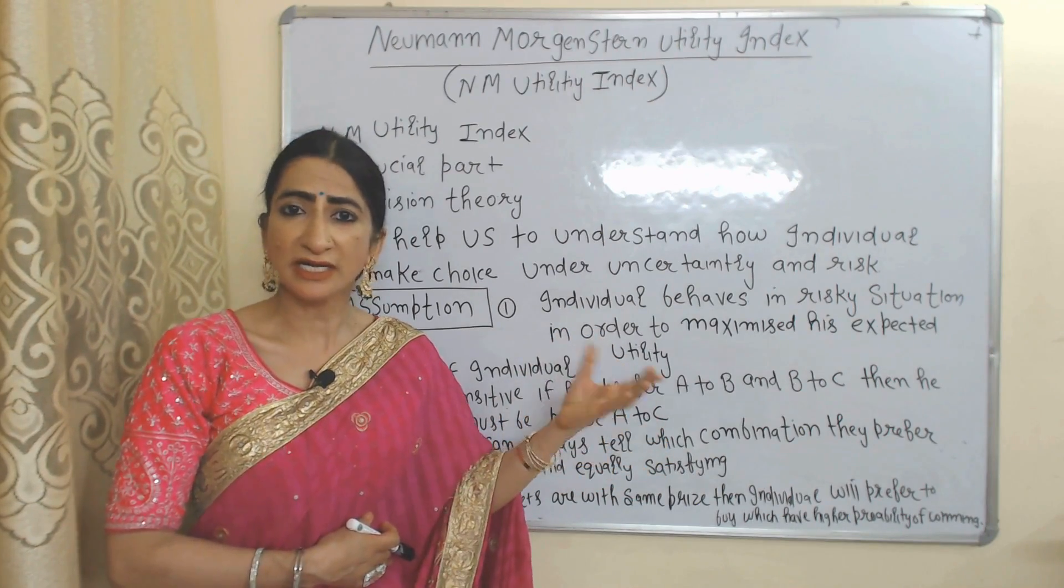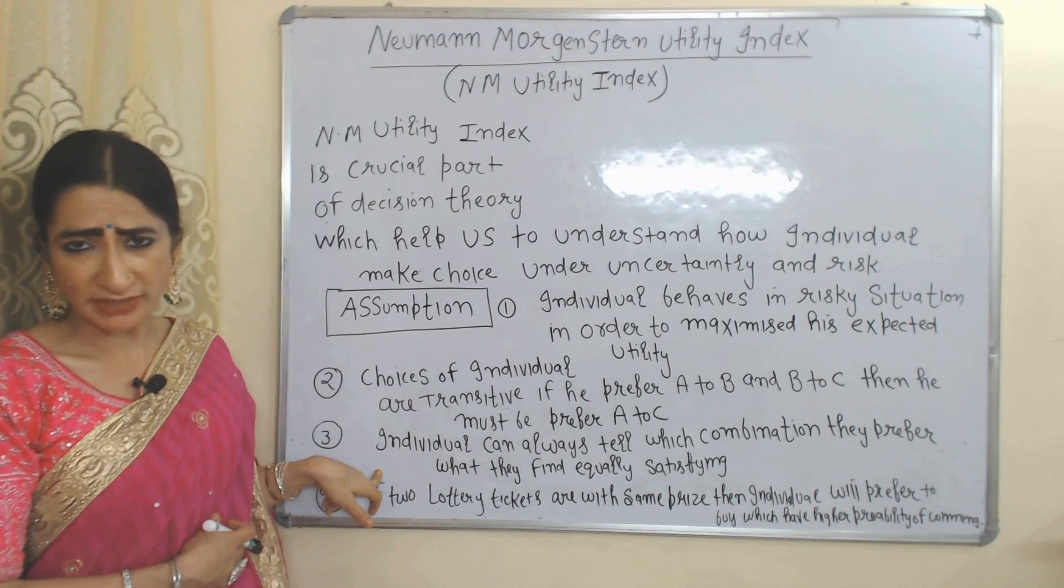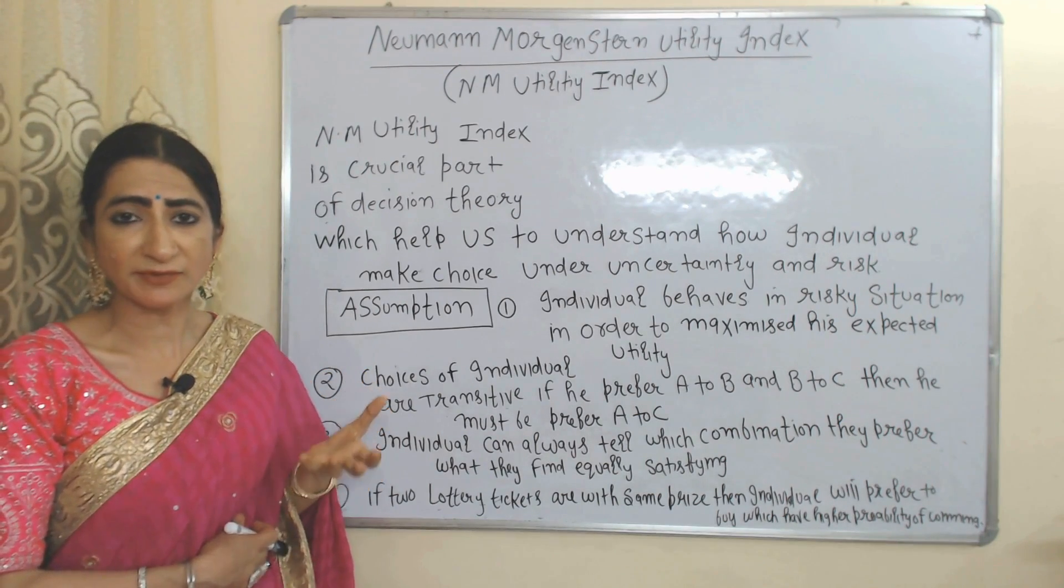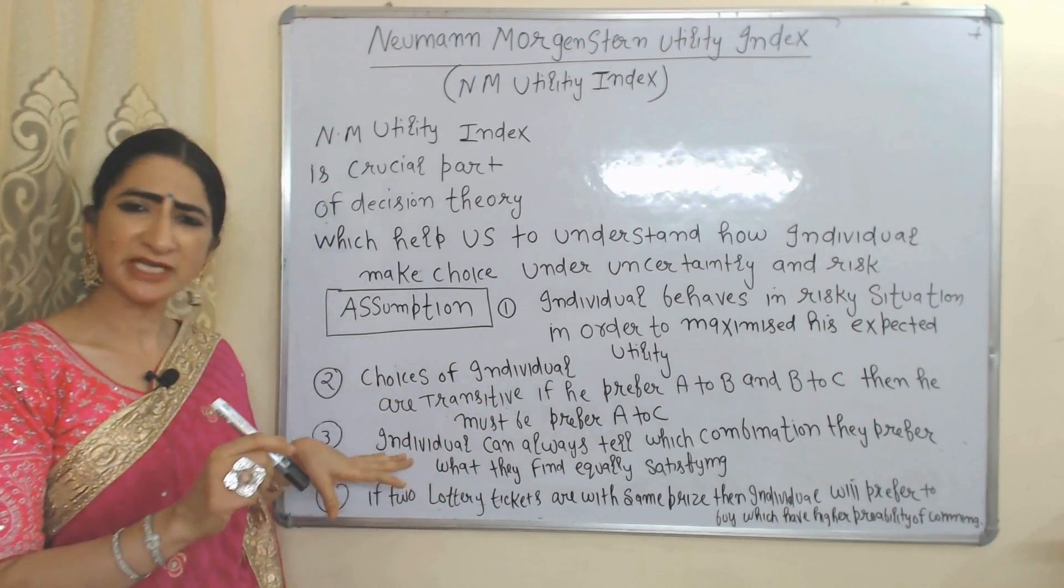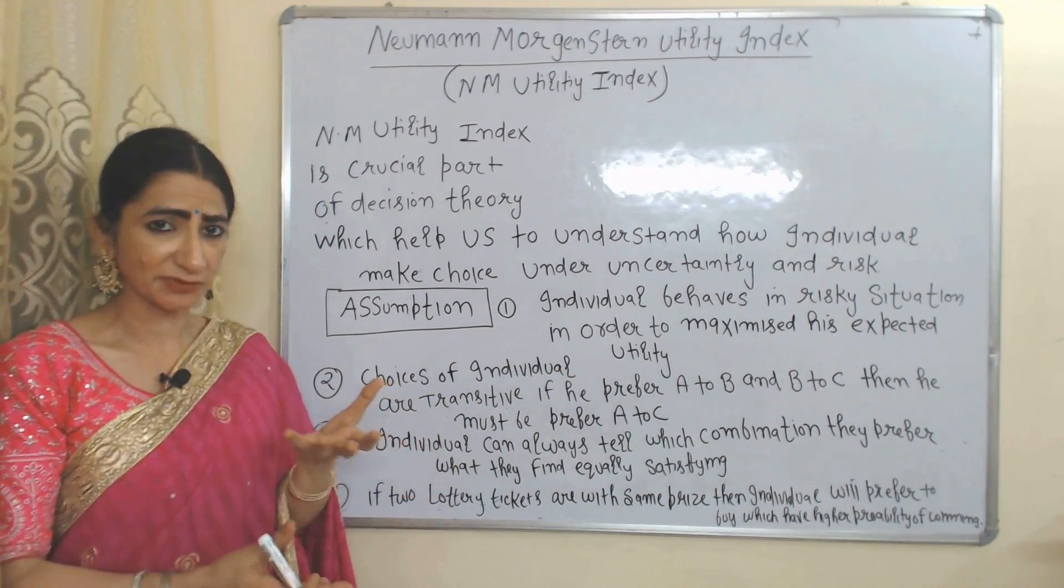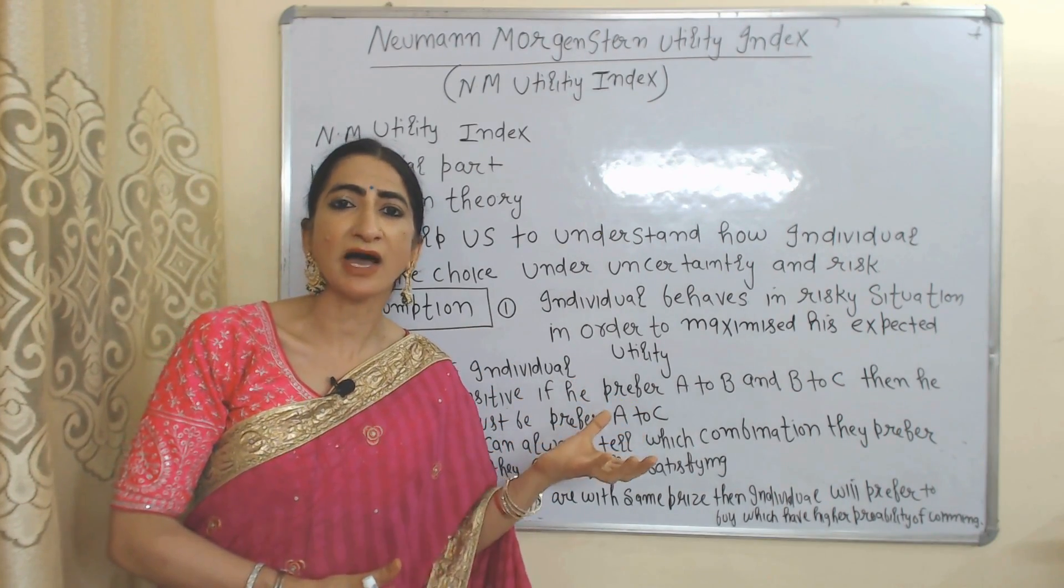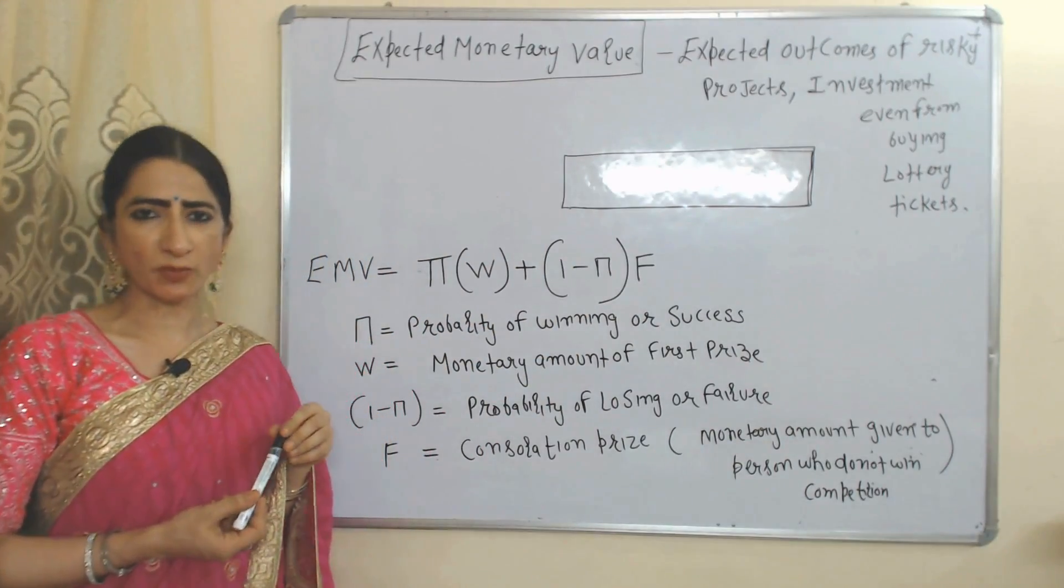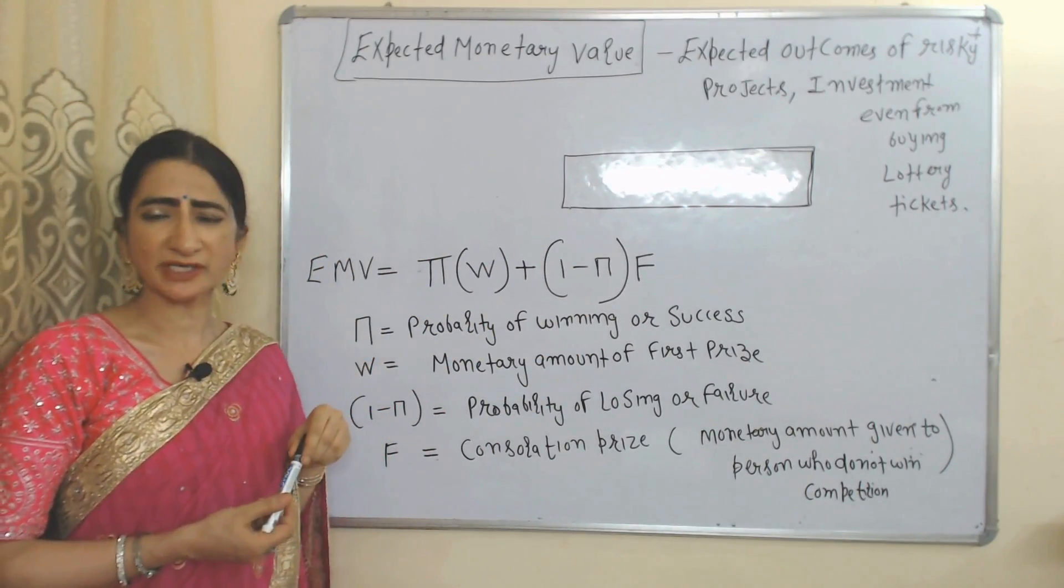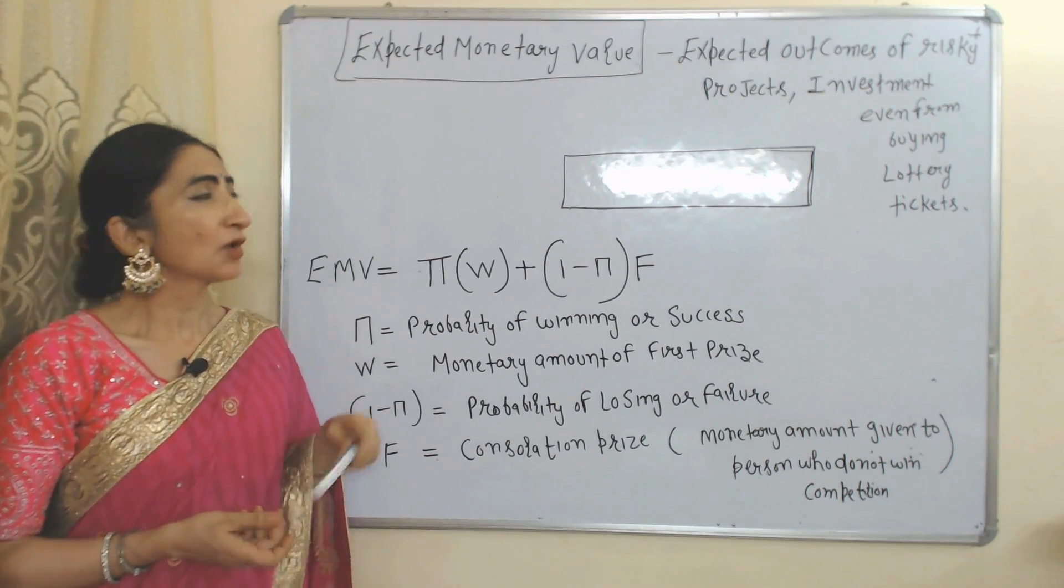Individuals can always tell which combination they prefer. They can also tell which combinations give them equal satisfaction. If there are two lottery tickets with the same price, the individual will buy the one with a higher probability of winning.